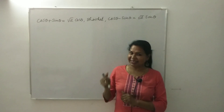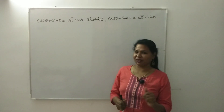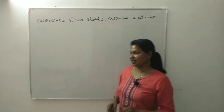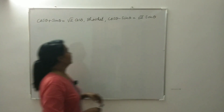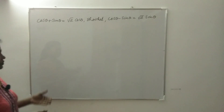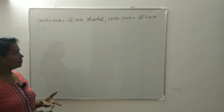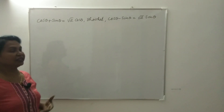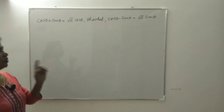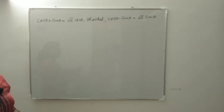Hello everyone, this is the question for the day. We can solve it. Given that cos θ + sin θ = √2 cos θ, you have to show that cos θ - sin θ = √2 sin θ.